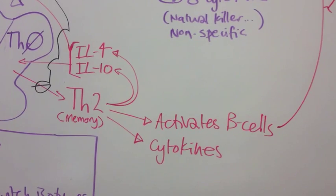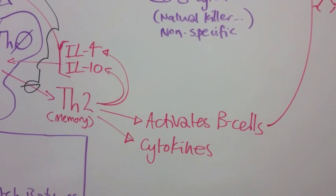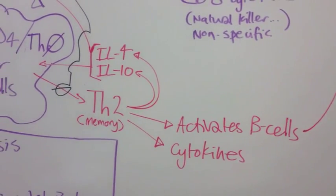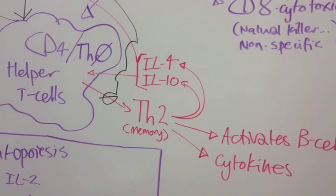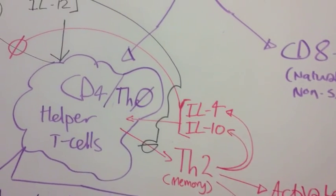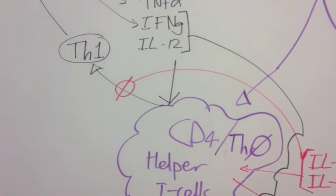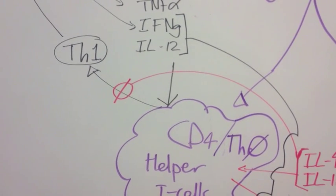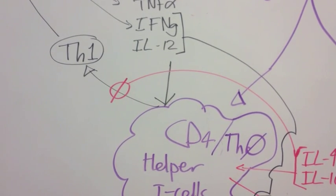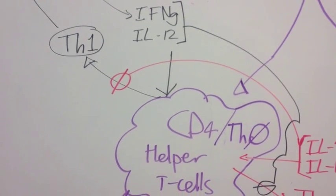TH2 cells also produce cytokines as well as producing more interleukin-4 and interleukin-10. When interleukin-4 and interleukin-10 are present, they also have a dampening effect on the ability for TH0 to differentiate to TH1 cells.